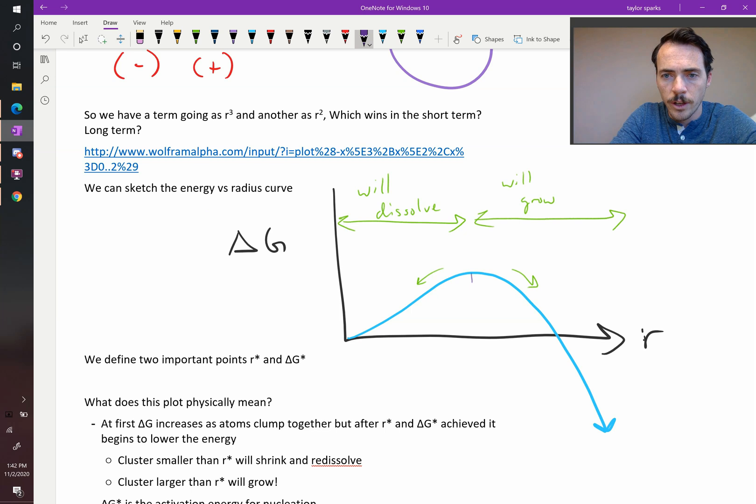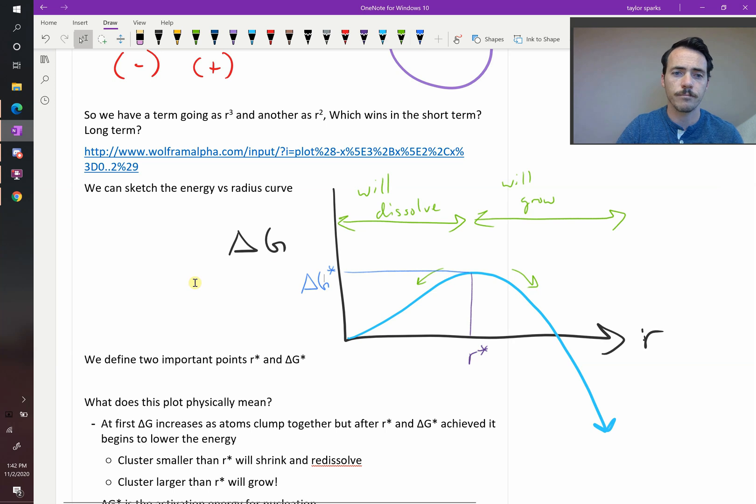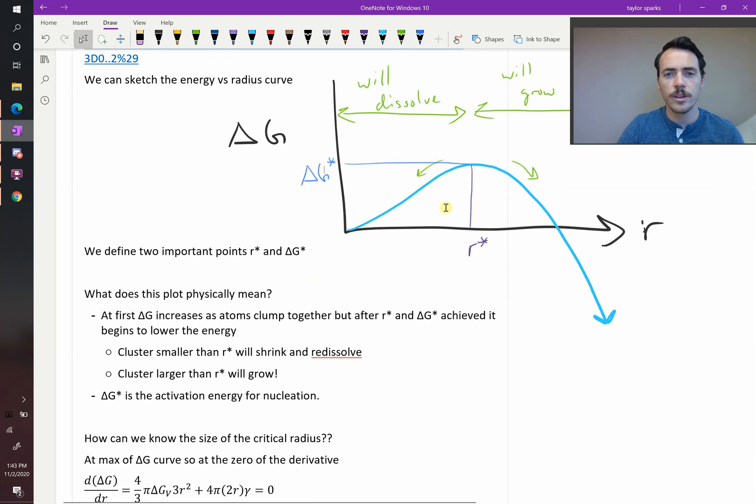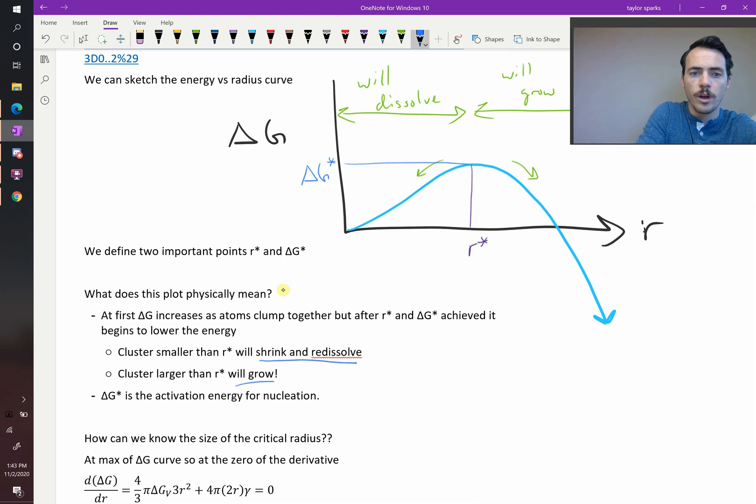We can also identify a couple of key points on this plot. For one thing, we have this point right here. That is our critical radius size. We're going to call it R*. R* is the critical radius size below which the nucleus will just shrink down again and dissolve, and above which it will continue to grow and it will become thermically stable. Now we can also identify this point over here at the top of that plot, and we can call that our ΔG*, which is going to be a critical activation energy for nucleation. If you can get over that activation energy, then you will form a stable nuclei. So what does this plot physically mean? We've already said it. Things smaller than R* are going to shrink and redissolve. Those that are larger will grow, and we have an activation energy.